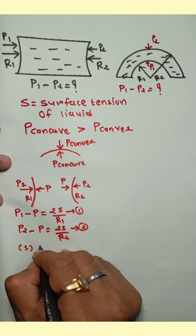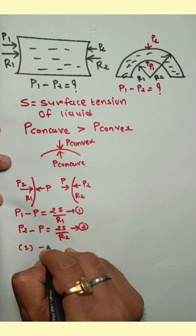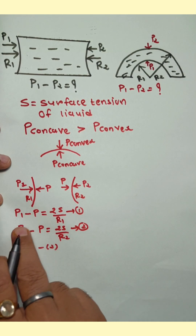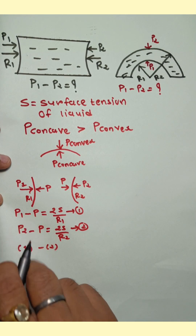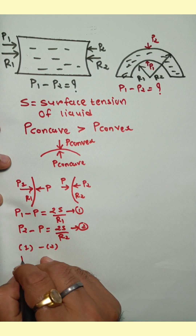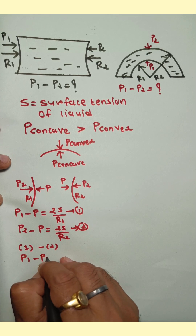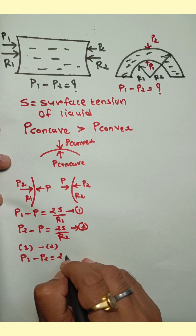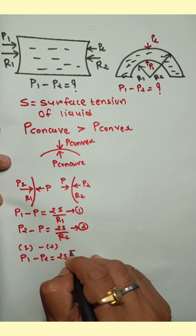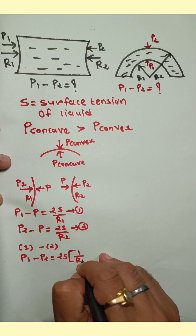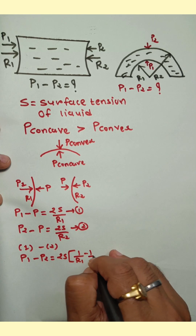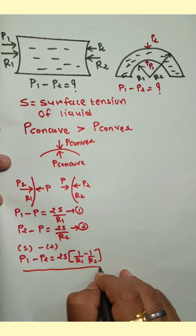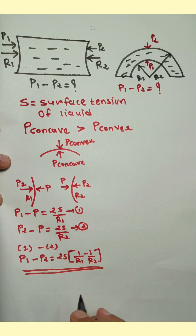Taking Equation 1 minus Equation 2: P1 minus P, minus P2 minus P. The P terms cancel, giving P1 minus P2 equals 2S upon R1 minus 2S upon R2, which simplifies to 2S times the quantity 1 upon R1 minus 1 upon R2.